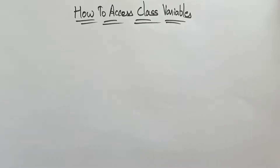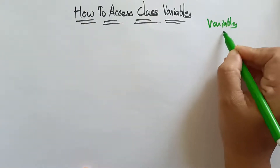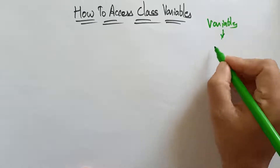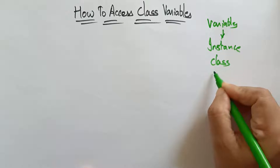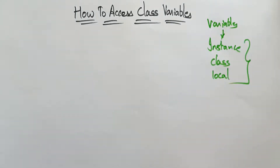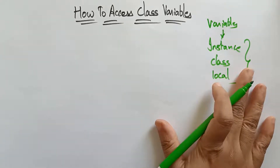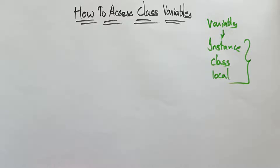Hi students, welcome back. Coming to the next topic: how to access the class variable. In the previous video I explained how to access instance variables. Now let's see how to access class variables. Java contains three types of variables: instance variable, class variable, and local variable.